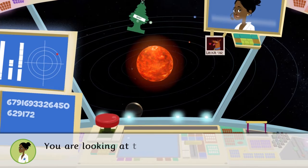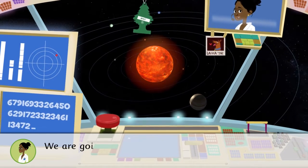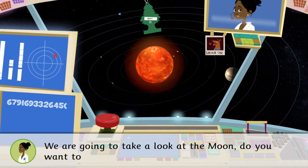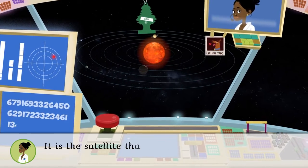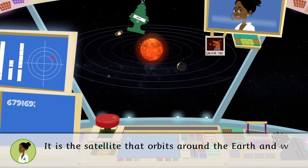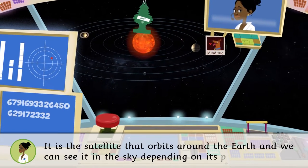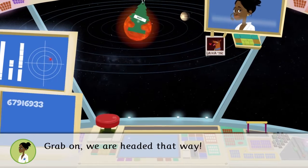You are looking at the solar system. We are going to take a look at the Moon. Do you want to come? It is the satellite that orbits around the Earth and we can see it in the sky depending on its phases. Grab on. We are headed that way.